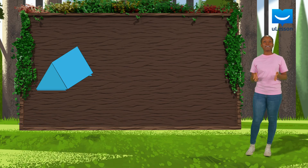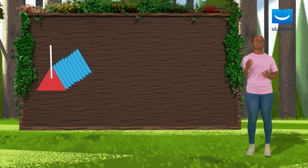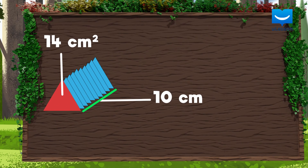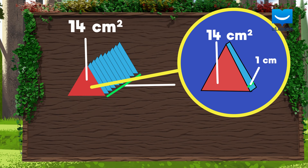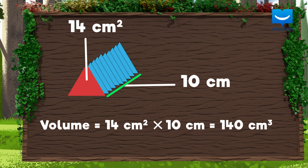Suppose this prism was made by stacking 10 identical triangles whose area is 14 square centimeters. What is the volume? The extended length is the same as the number of triangles used, which is 10. Hence, the volume of this prism is the area of the base times 10 — that is 14 square centimeters times 10 centimeters, which equals 140 cubic centimeters.